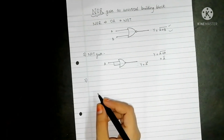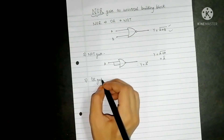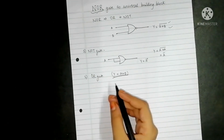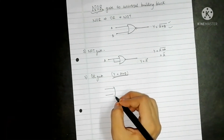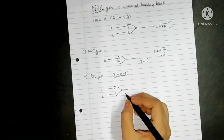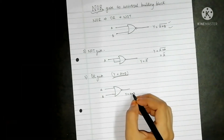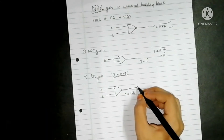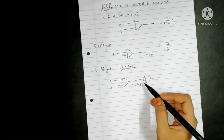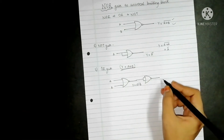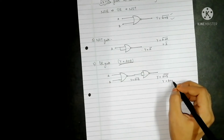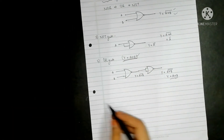Now we will construct the OR gate. The Boolean expression for OR gate is Y equals A plus B. We take a NOR gate with inputs A and B, giving output A plus B, the whole bar. We then pass this through another NOR gate with the same input to both terminals, acting as an inverter. The output becomes A plus B bar, over bar, which equals A plus B. Thus the OR gate is obtained using NOR gates.